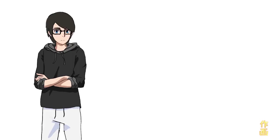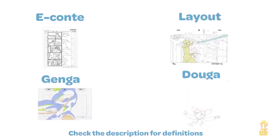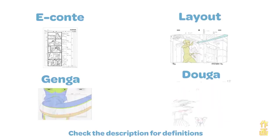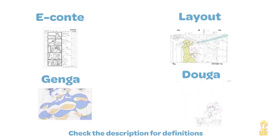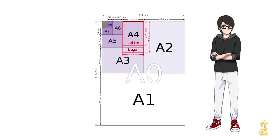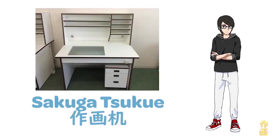If you're interested in using the animation tools that are tried and true, here's what's used in the industry primarily. Econte, Layout, Genga, and Doga are drawn on pre-made templates that have been made by the studio. Paper size can vary but A4 is almost universal. They will also produce the drawings with a table called a sakugatsukue, which literally just means animator table. It has a light box built-in and various shelves to keep the paper organized.